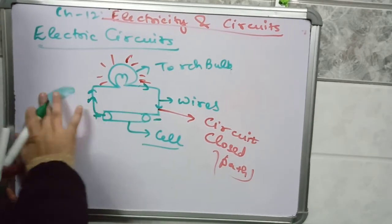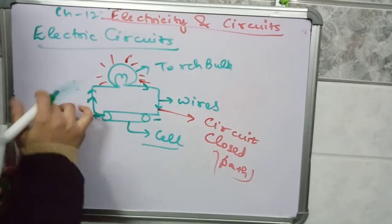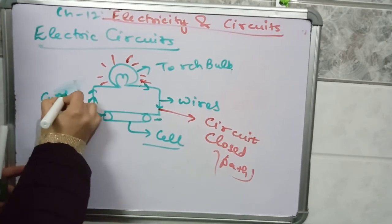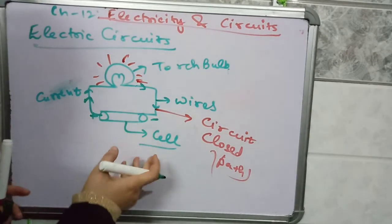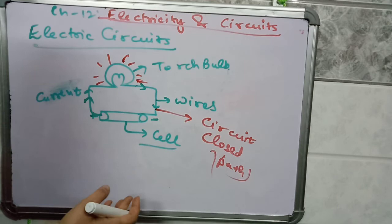Current flows from the plus of a battery to the minus of a battery. You can use a cell here or you can use a battery also.